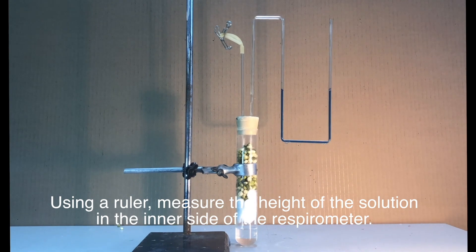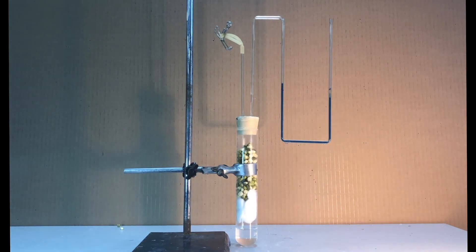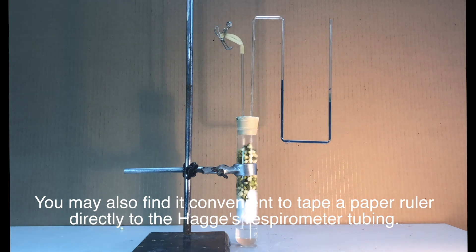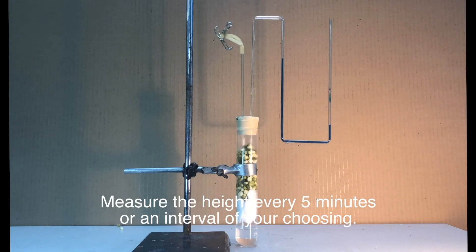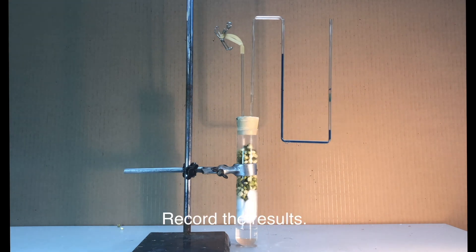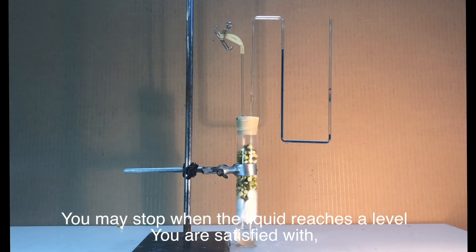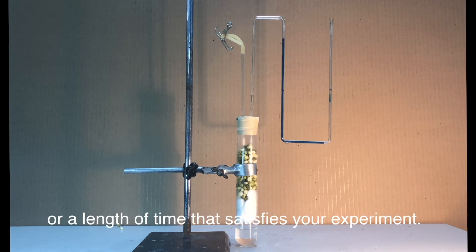Using a ruler, measure the height of the solution in the inner side of the respirometer. You may also find it convenient to tape a paper ruler directly to the Hagi respirometer tubing. Measure the height every five minutes or an interval of your choosing. Record the results. You may stop when the liquid reaches a level you are satisfied with or a length of time that satisfies your experiment. Repeat this process at least five times.